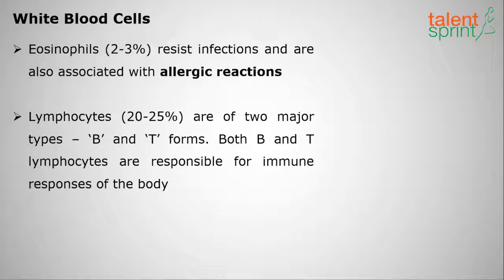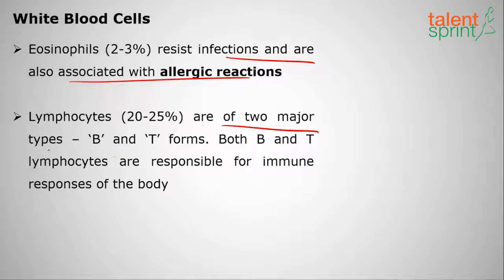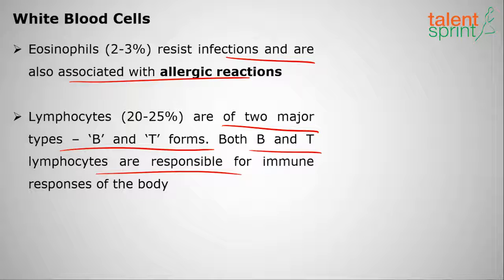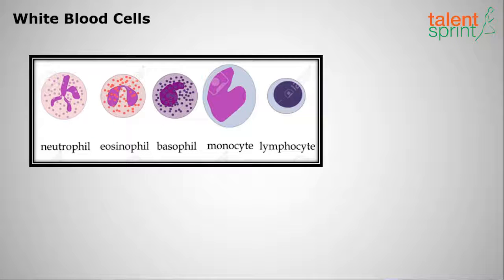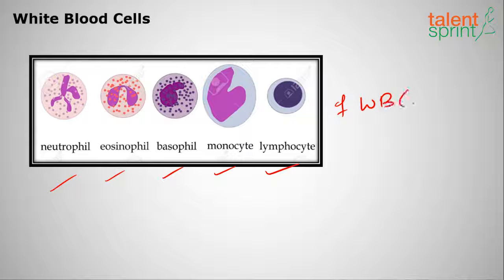WBCs fight against diseases and improve our immune system. Basophils secrete histamine, serotonin, and heparin and are involved in inflammatory reactions. Eosinophils resist infections and are associated with allergic reactions. Lymphocytes are of two major types, B and T, and both are responsible for immune responses.